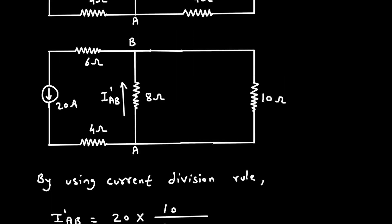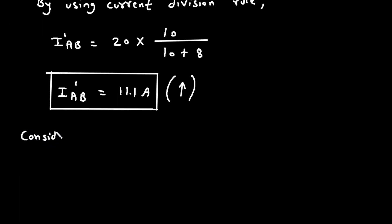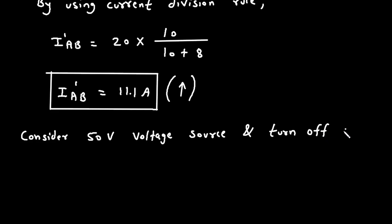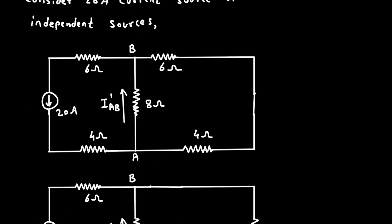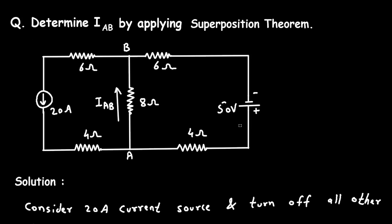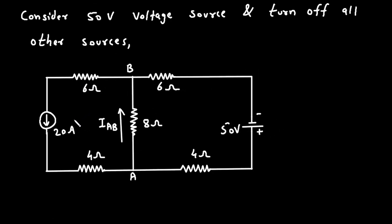Next, we consider the 50 volt voltage source and turn off all other sources. When we turn off the current source, it is replaced by an open circuit. The current due to this source will be IAB double prime.